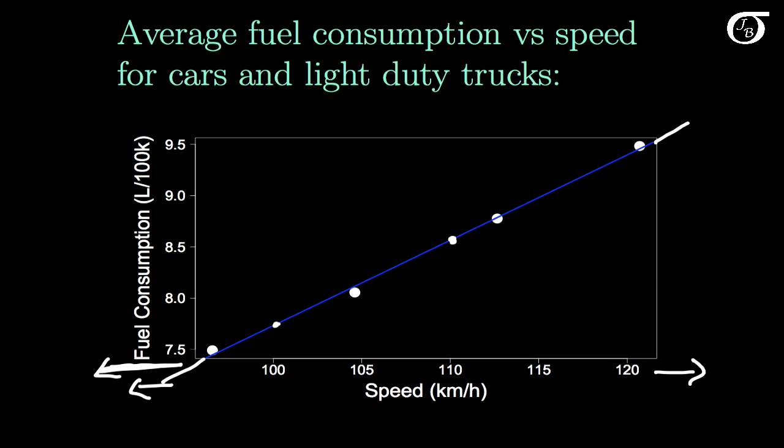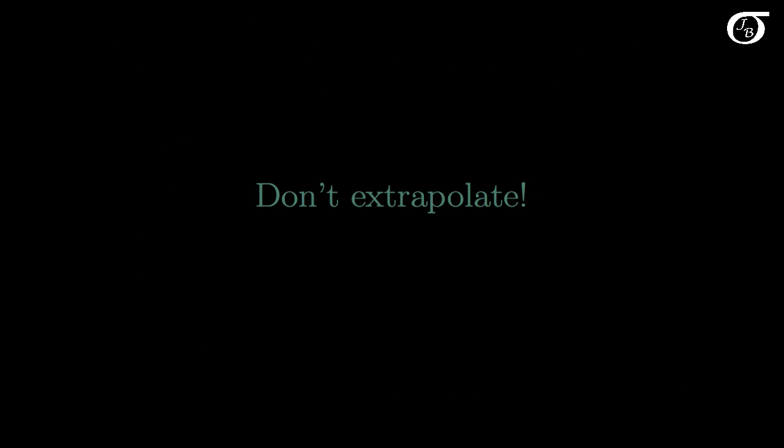Using the regression line for prediction and estimation beyond the range of the observed data is called extrapolation, and it really should be avoided. The lesson here is don't extrapolate, because we don't have any real evidence of what the true relationship is beyond the range of our observed data.